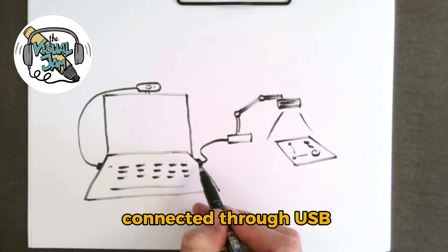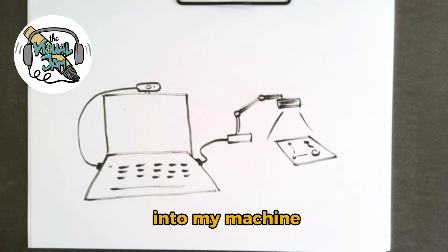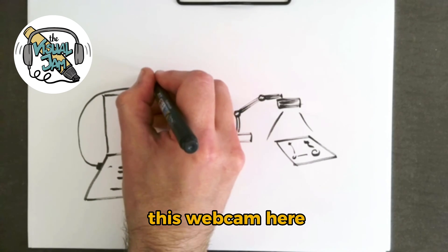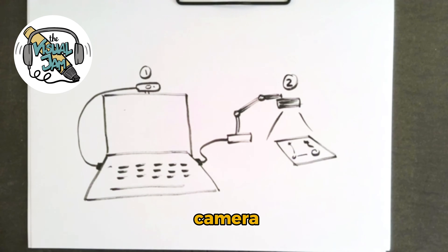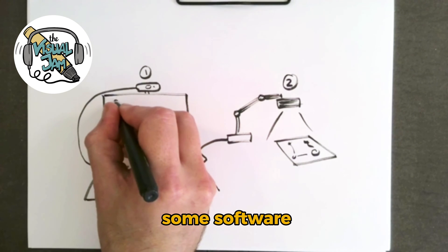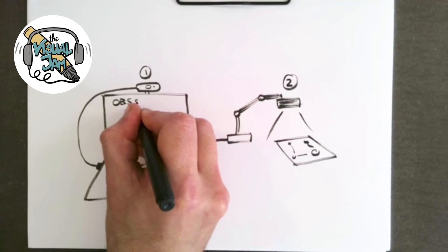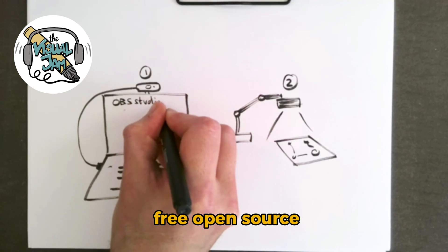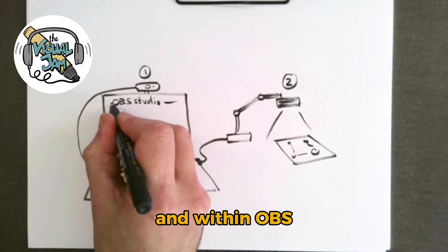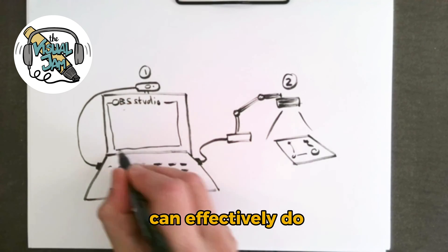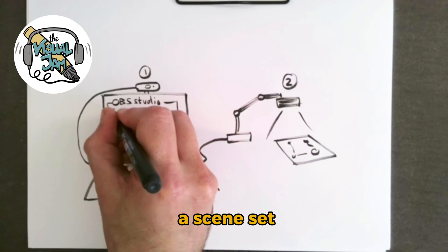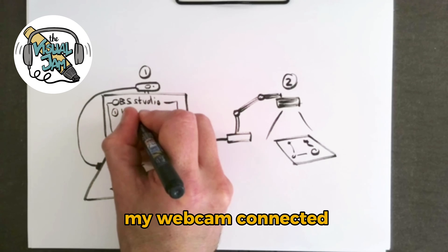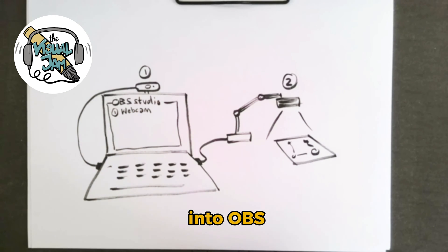Now to achieve the switch from this webcam here, number one, to my document camera. So what I'm doing is I'm using some software called OBS Studio. So this is free open source software and within OBS Studio, what you can effectively do is you can set up different scenes. So I've got a scene set up here, scene number one, where I've got my webcam connected as a source into OBS.